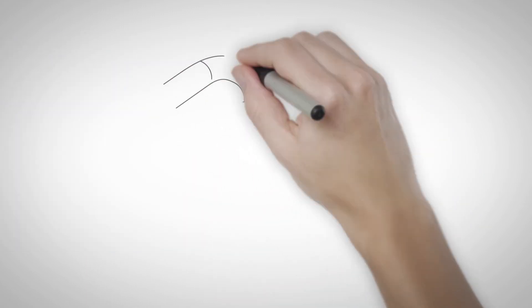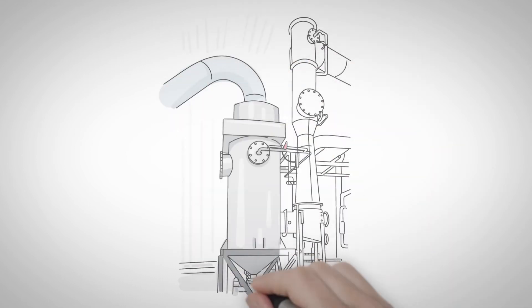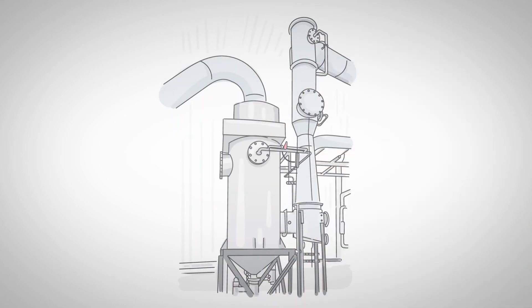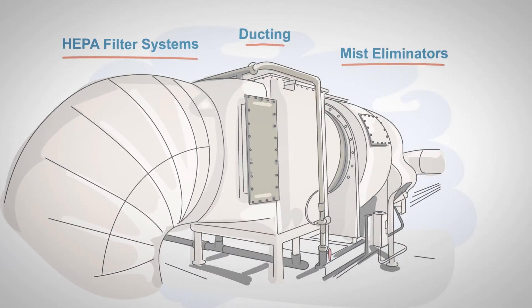Other products in our HEE-DUAL product line include adjustable throat venturi scrubbers to control nuisance and hazardous particulate matter and high solubility gases and mists, HEPA filter systems, ducting, and mist eliminators.